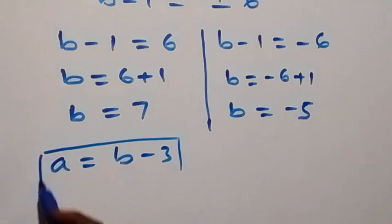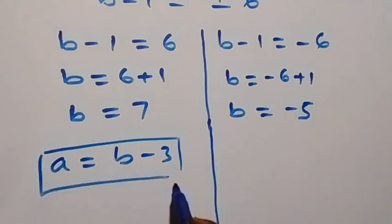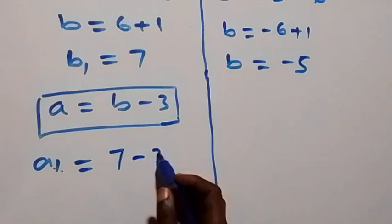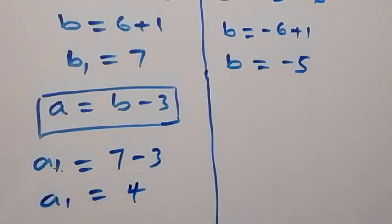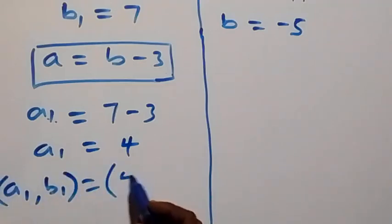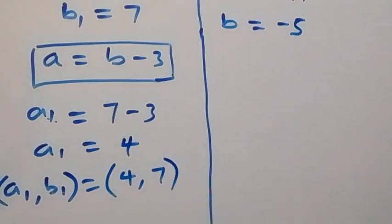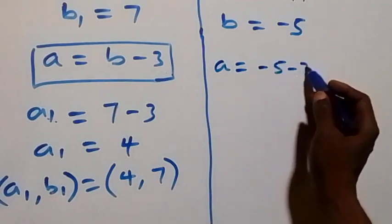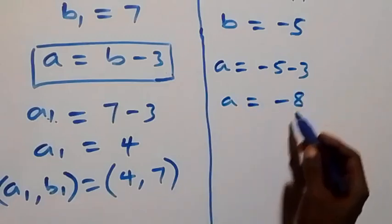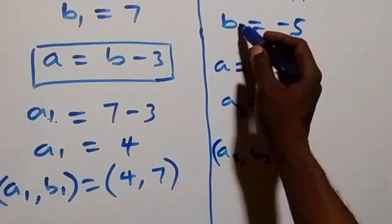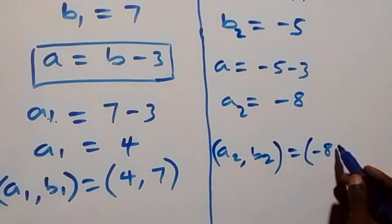From equation 3, a equals b minus 3, we find the corresponding a values. For b1 equals 7: a1 equals 7 minus 3 equals 4, so solution set (a1, b1) equals (4, 7). For b2 equals minus 5: a2 equals minus 5 minus 3 equals minus 8, so solution set (a2, b2) equals (minus 8, minus 5).